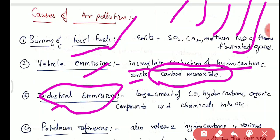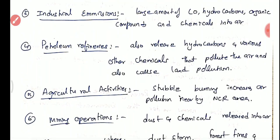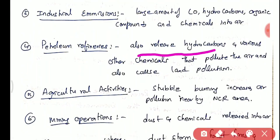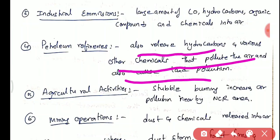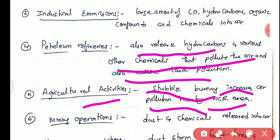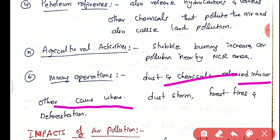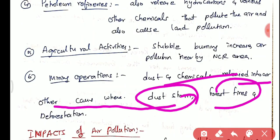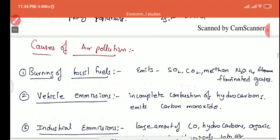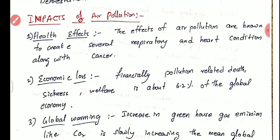Industrial emissions release carbon monoxide, hydrocarbons, organic compounds, and sulfur dioxide. Petroleum refineries release hydrocarbons and other chemicals that pollute the air and cause land pollution, which in turn contributes to air pollution. Agriculture activities such as stubble burning in Punjab and Haryana increase air pollution in the NCR area. Other causes include mining operations, dust storms, forest fires, and deforestation.